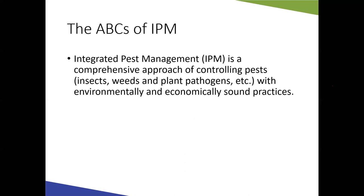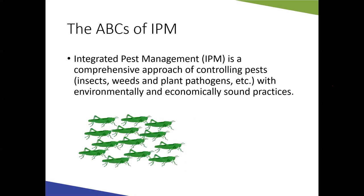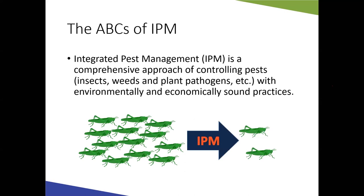The ABCs of IPM: when managing tomato problems, we want to use integrated pest management — a comprehensive, environmentally and economically sound approach to controlling pests, whether insects, weeds, or pathogens. The goal is to use IPM techniques to bring pest populations down to a lower, more manageable level — not necessarily completely eliminate them, but reduce damage to our plants.